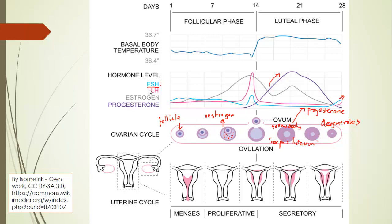Just one hormone we haven't talked about: LH. LH's job is to surge just before ovulation — in fact it surges and then ovulation occurs about 36 hours later. It stimulates ovulation.